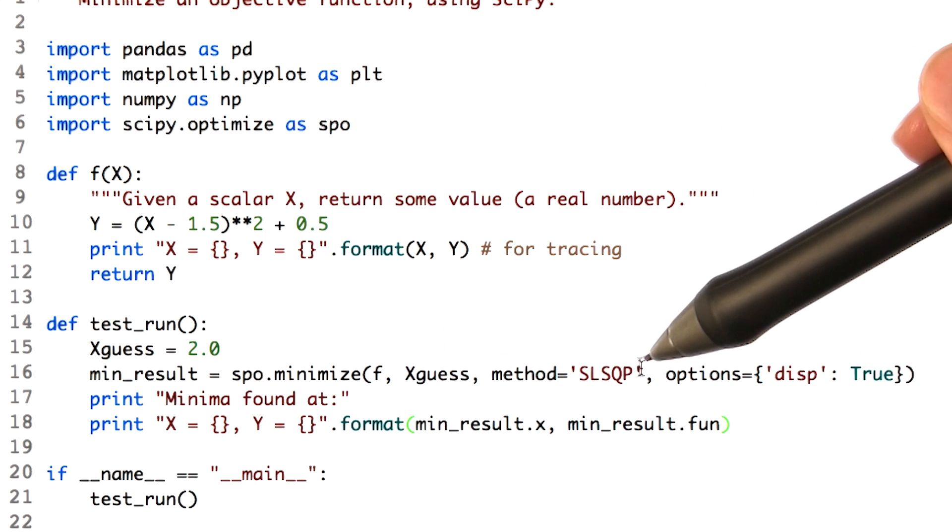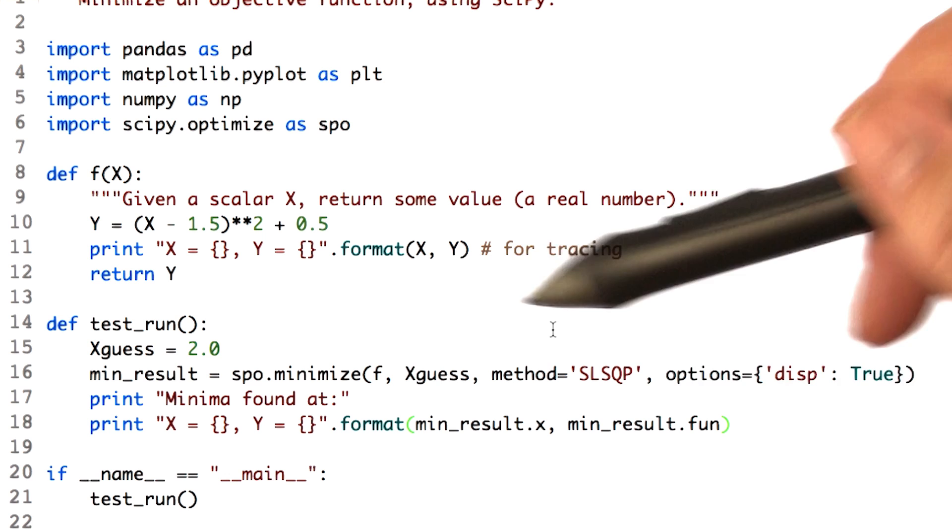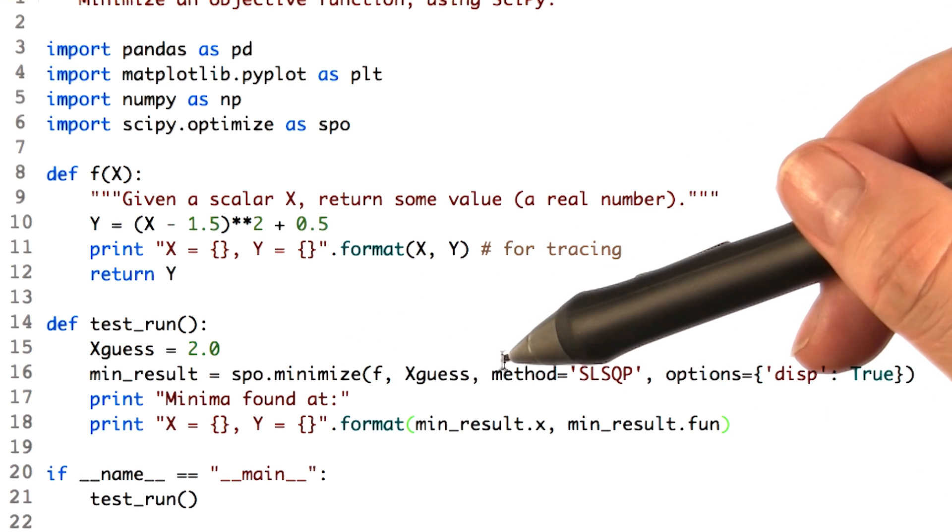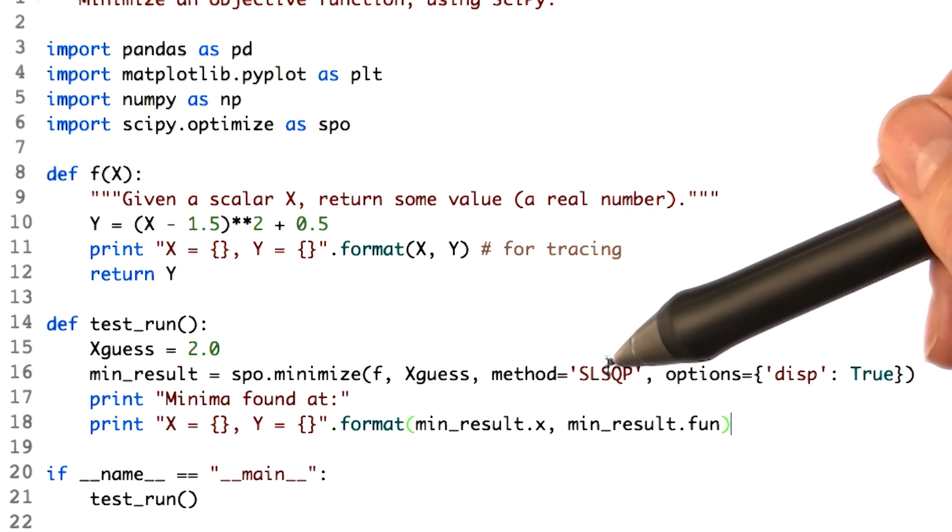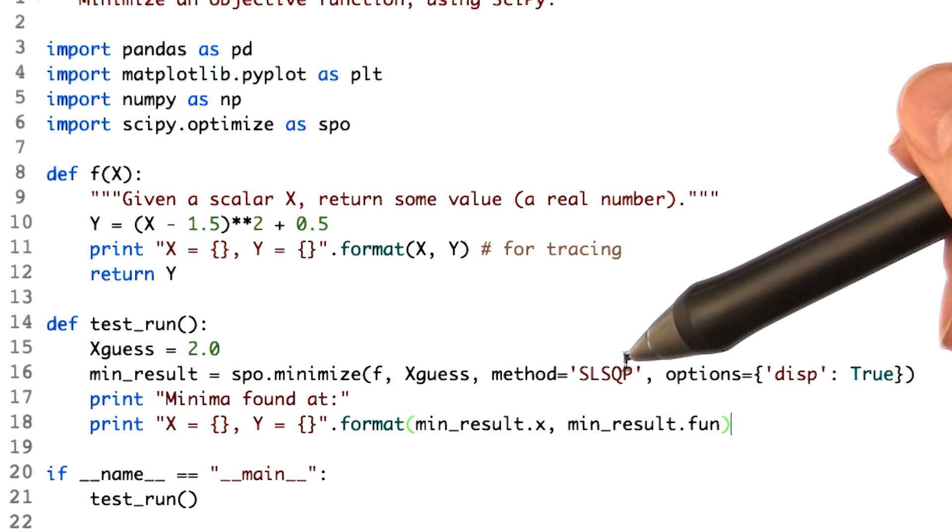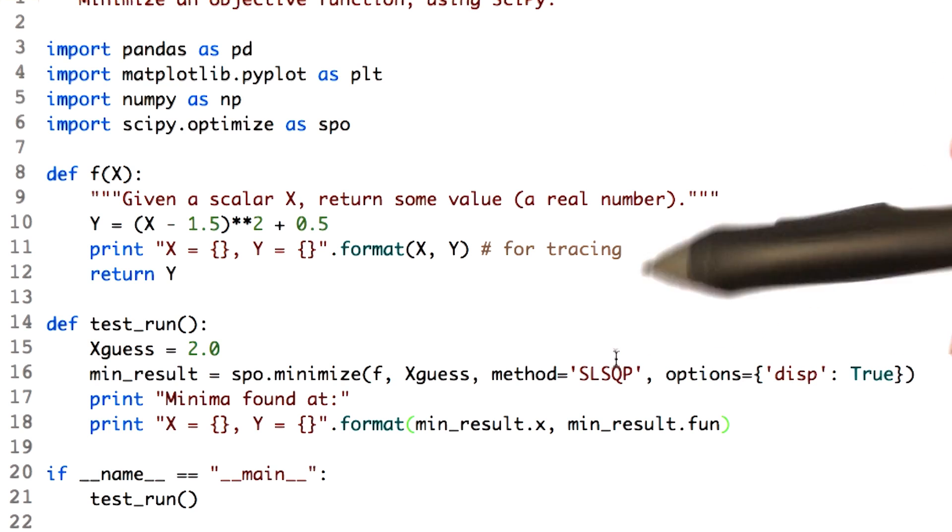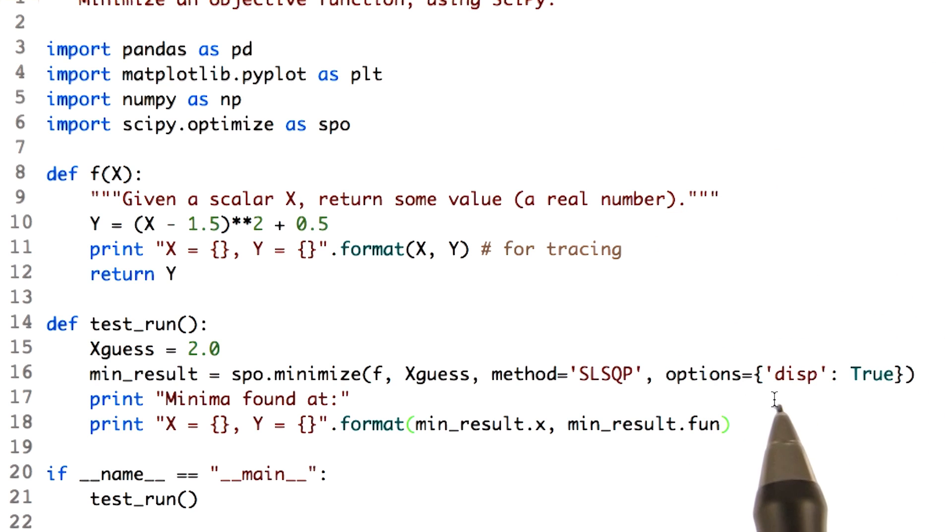Method is, we're directing minimize to use a particular minimizing algorithm. We'll talk about that a little bit later. But this is one of those particular algorithms that happens to work pretty nicely. We send it one more option here, disp, which is true. Which means we just want it to be verbose about things that it discovers.